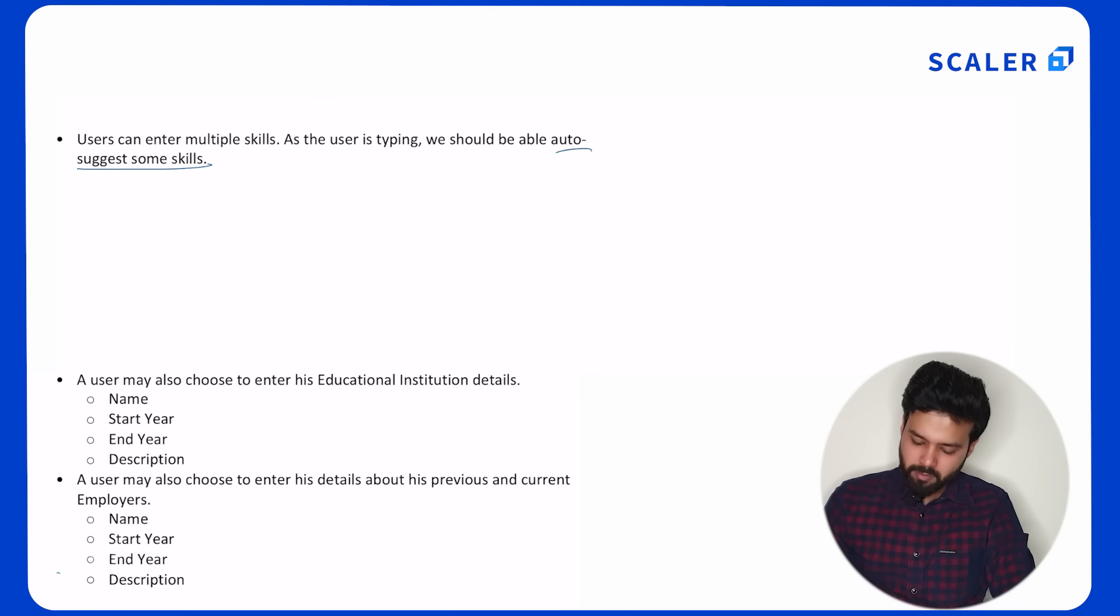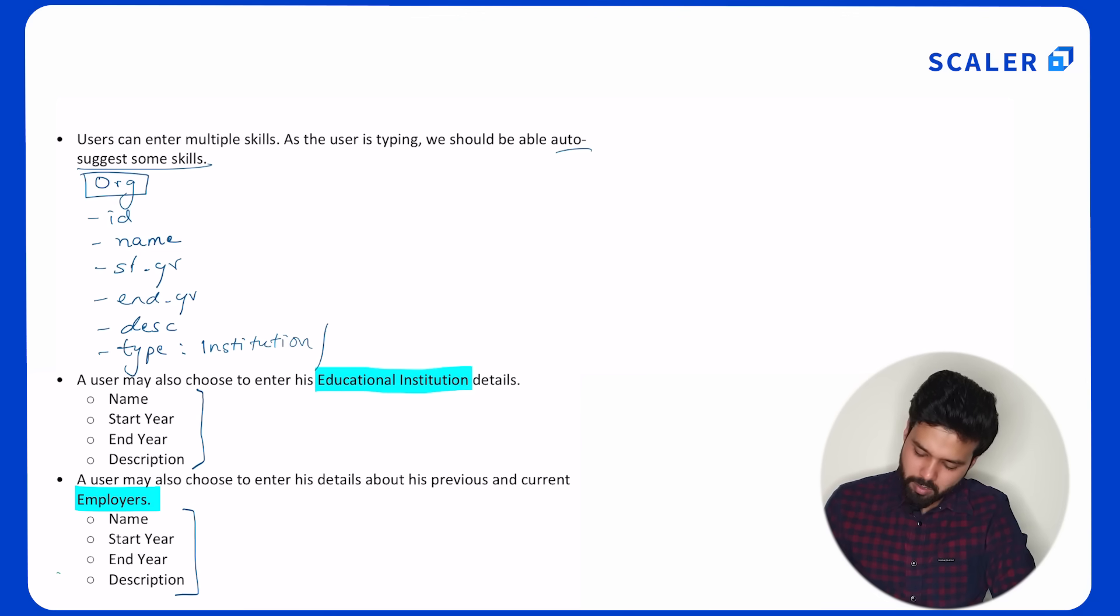If we read the next set of requirements, it states that we need to keep information about educational institutions and employers. And if you look closely, the attributes in the educational institutions and the employers are the same. So what I can have is I can create an entity called organization. Inside an organization, I can have an ID field and all the other fields depicting name, start year, end year, and description. I'll need to have one more type. This type will store information of institution or company. So from the looks of it, or for the given set of features, this table works really well. The challenge here is: what if I want to add other attributes?